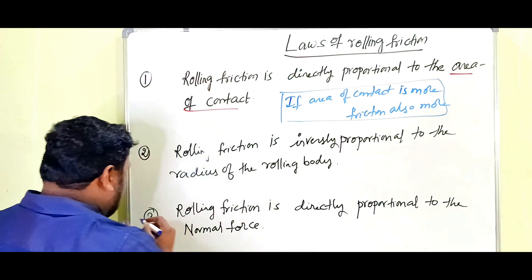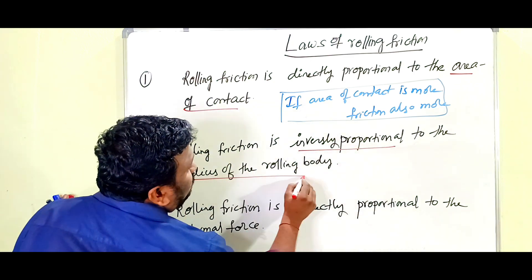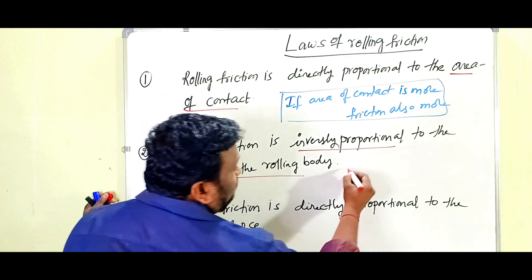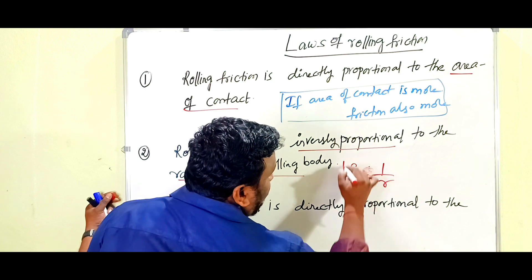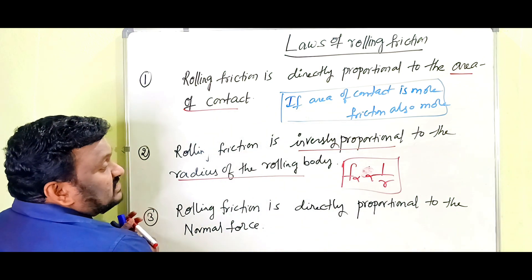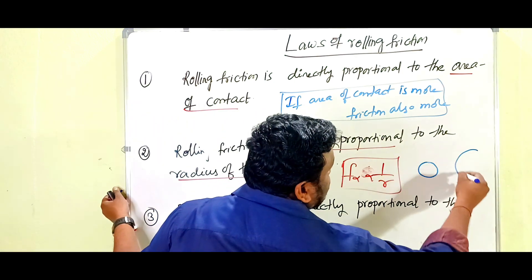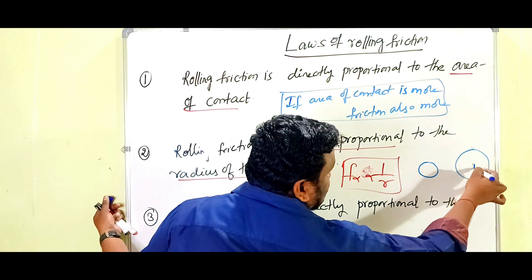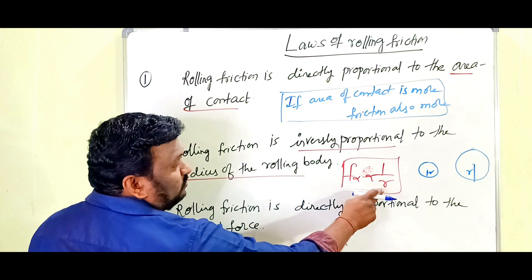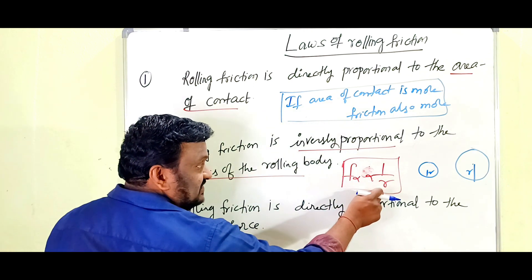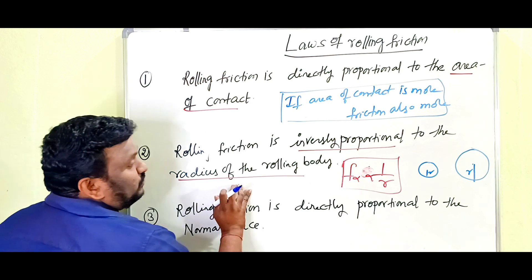The second law of rolling friction: rolling friction is inversely proportional to the radius of the rolling body. So Fr is proportional to 1/R. For example, if one rolling body has a larger radius and another has a smaller radius, when the radius is more, friction is less; when the radius is less, friction is more. This is the second law.